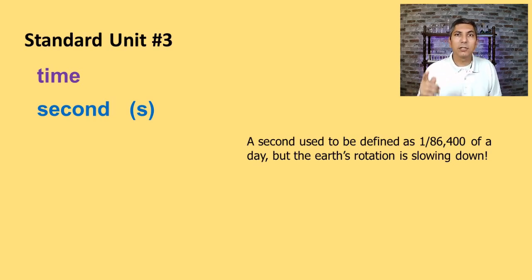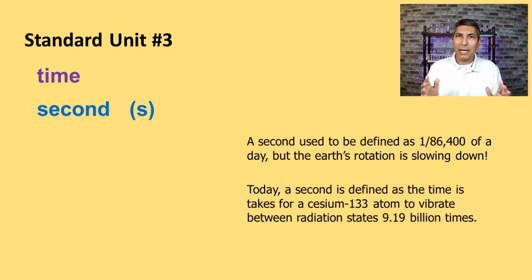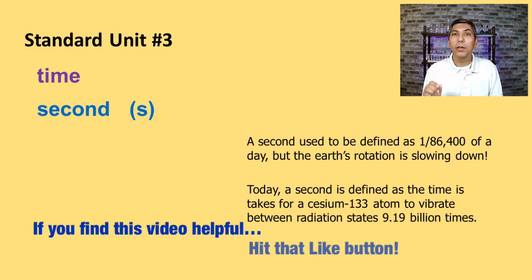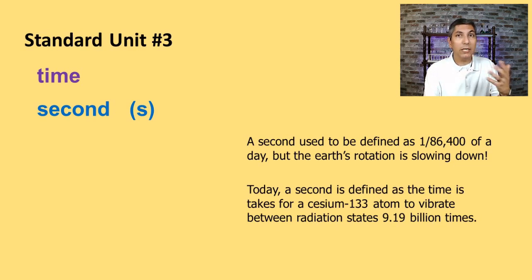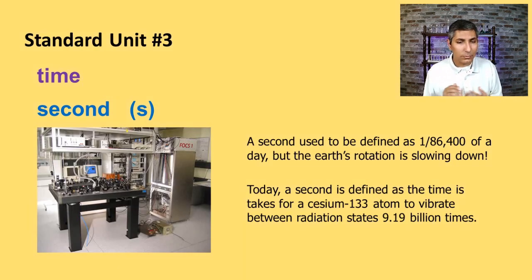And so, once again, a standard is something that has to be never changing. And if the length of a day is changing, then it's not a standard. So when SI came onto the scene, or a bit after that actually, a second became defined as the time it takes for a cesium-133 atom to vibrate between radiation states about 9.19 billion times. And so we have this vibration. It's very, very fast. And there has to be an instrument to count that. Well, this is a picture of that instrument. It's called an atomic clock. If you have a cell phone, that cell phone is going to set its time based upon the cell phone towers. And the cell phone towers listen to a radio signal that's given off by the atomic clock.